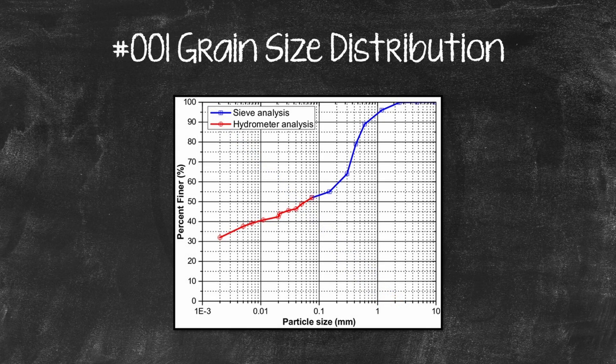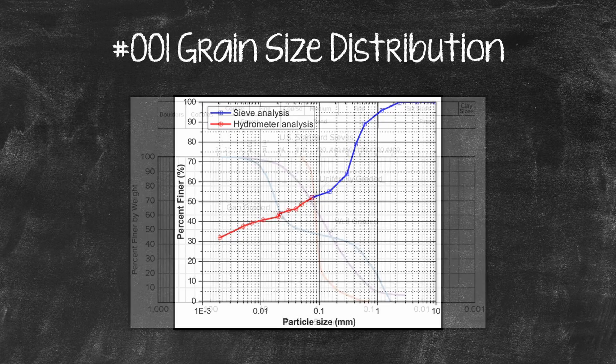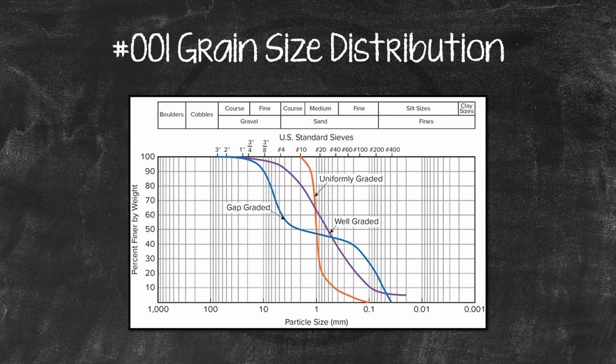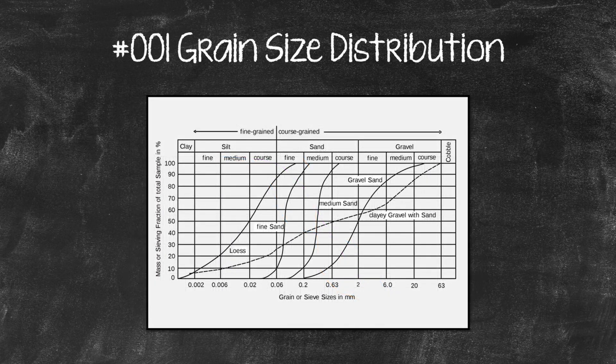These figures show some typical grain size distribution curves, sizes of the US standard sieves, and the typical sizes of different soil types. The grain size distribution curve is a plot of the percent of finer, passing, or smaller grain sizes by weight versus the particle diameter, plotted on a logarithmic scale.